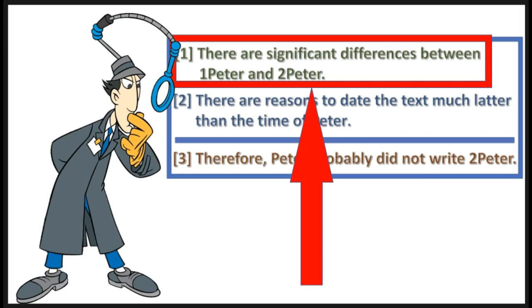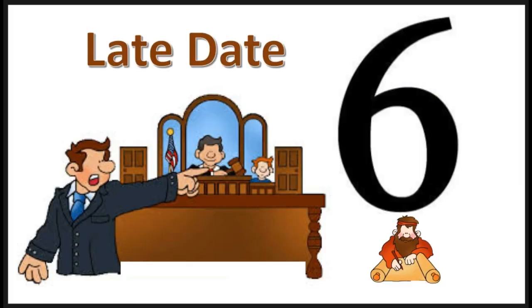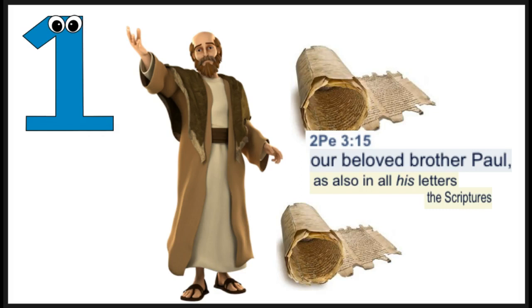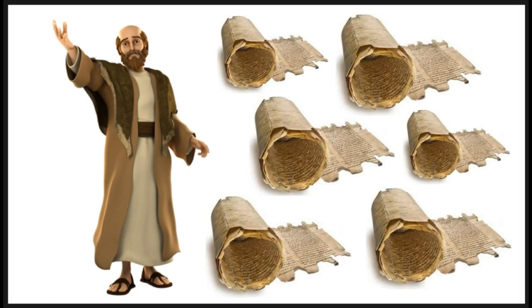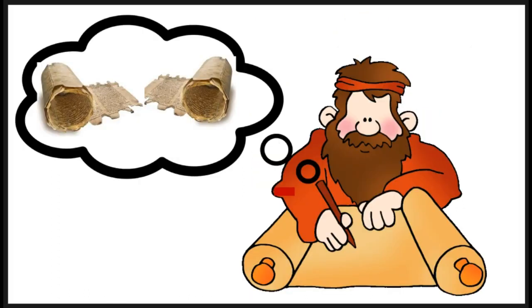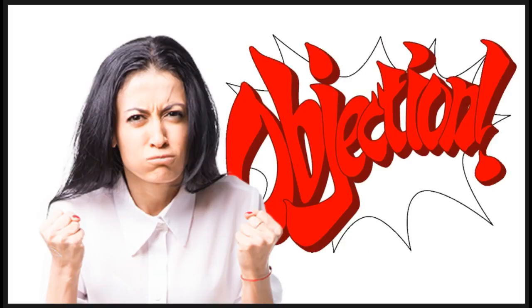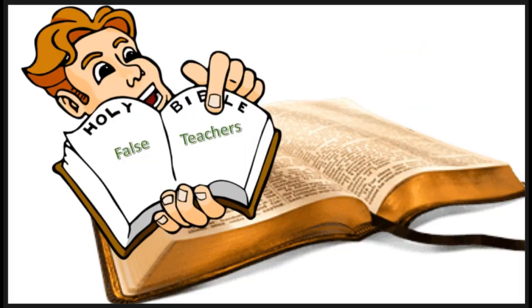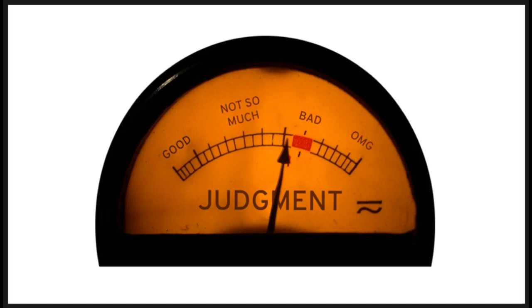Now that we've seen the first premise — the differences — is not a good reason to conclude a different author, let's take a look at the second premise, the date. There are six reasons given to imply a later date than the time of Peter. First, all of Paul's writings are referenced as authoritative, and this indicates a post-apostolic age, they'll say. The response is, all of Paul's writings mentioned in 2 Peter 3:16 means at least all the letters known by Peter, who obviously knew some of Paul's writings and considered them authoritative — look at Galatians 2:9. The second reason is that there are false teachers mentioned, and these false teachers are the 2nd-century Gnostics. The response is, false teachers mentioned here and elsewhere in Scripture simply means heretical teachers, and it's an unqualified assumption to conclude them as 2nd-century Gnostics, even if there are some parallels.